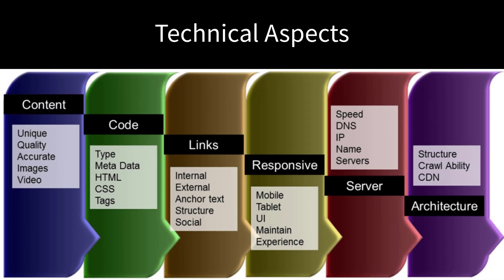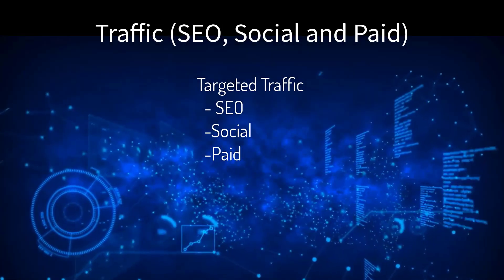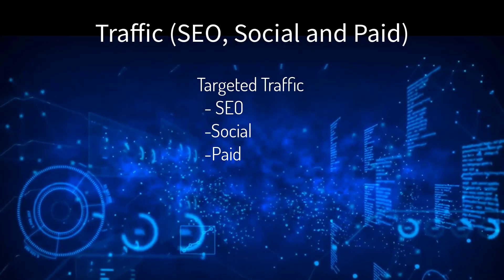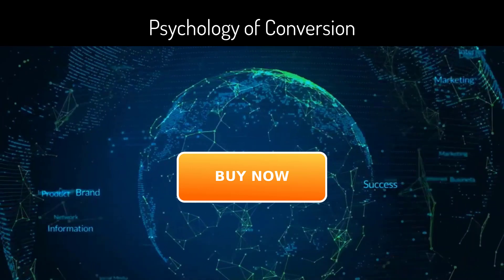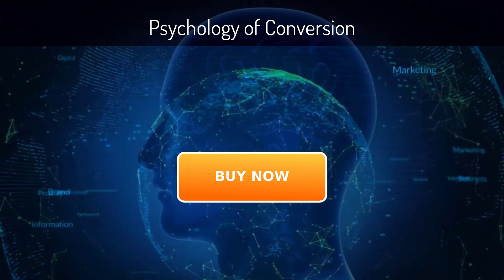All online marketing must have three elements in alignment: the technical aspects — servers, layout, code structure — the traffic — SEO, social, and paid — and the psychology of conversions.